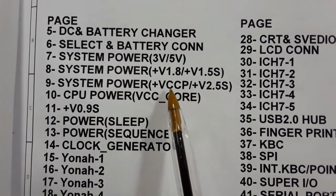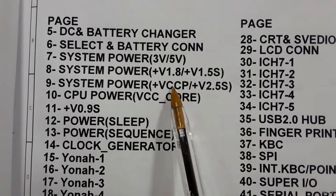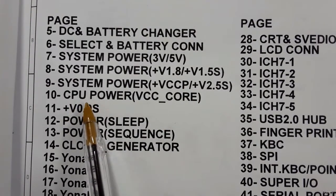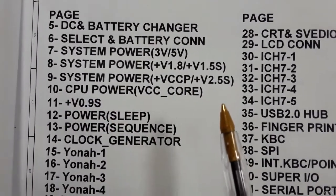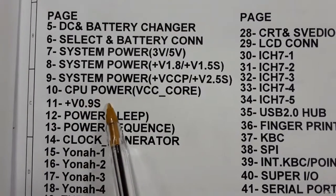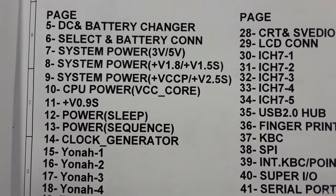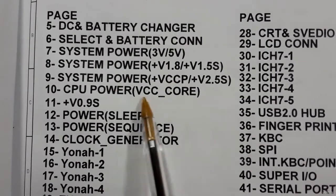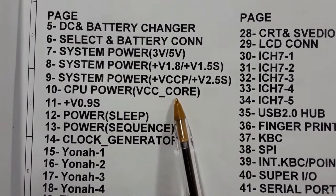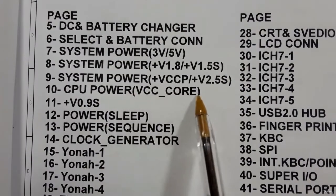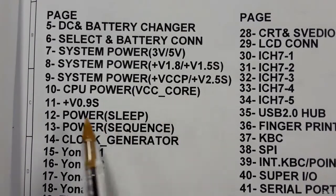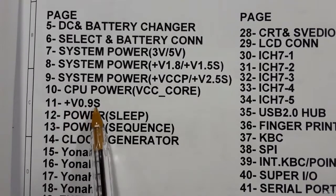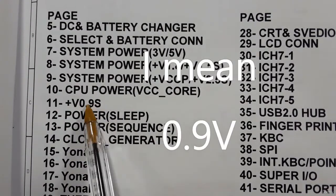Here we have the system power VCCP at 2.5 volts. The VCCP is the power for chips on the motherboard — for the GMCH and also for the CPU. Here we also have the CPU power, which is the main power for the CPU.